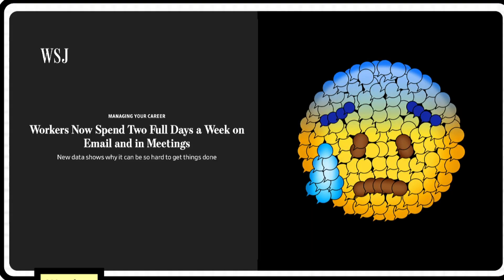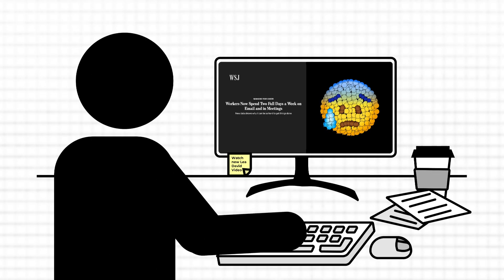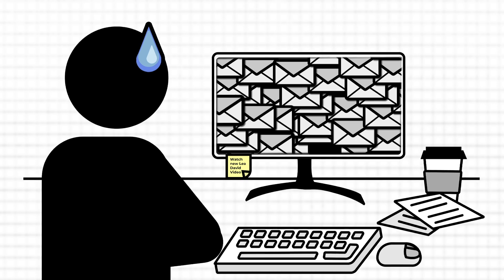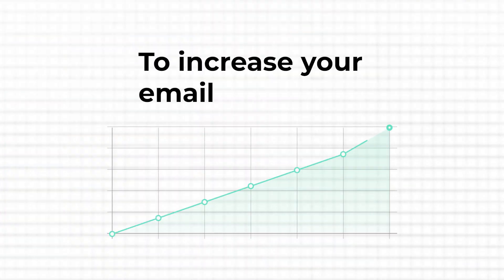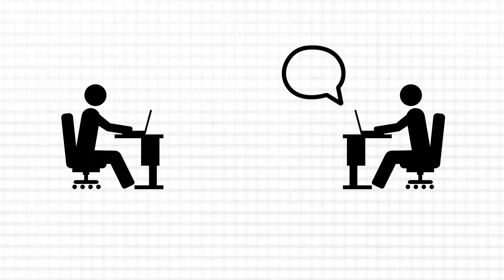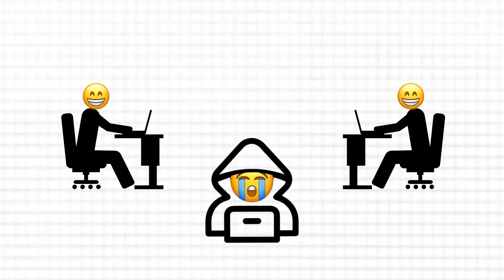According to some recent research, workers spend one to two days a week on email. That sounds crazy, but it's true. Just think about how much time you spend in your email inbox per day or week. Very often you might think that a lot of this time is wasted. So to increase your email efficiency, let's explore some easy Outlook tips and tricks — and we'll also make sure your emails and conversations are safe and secure when sharing confidential information.